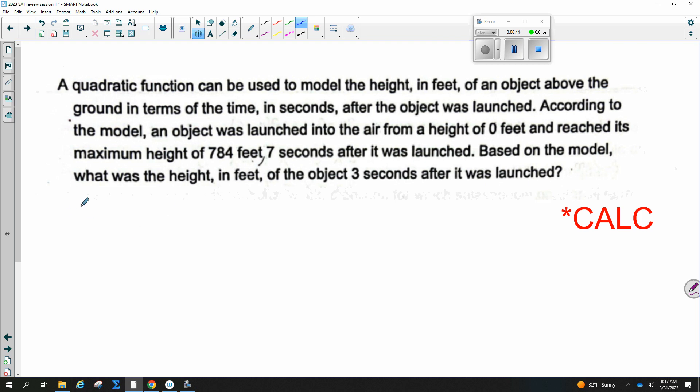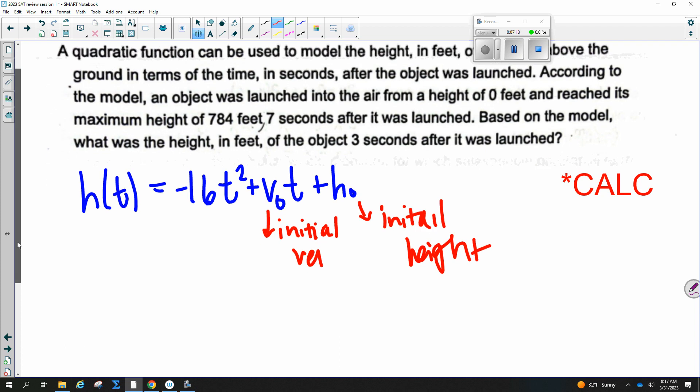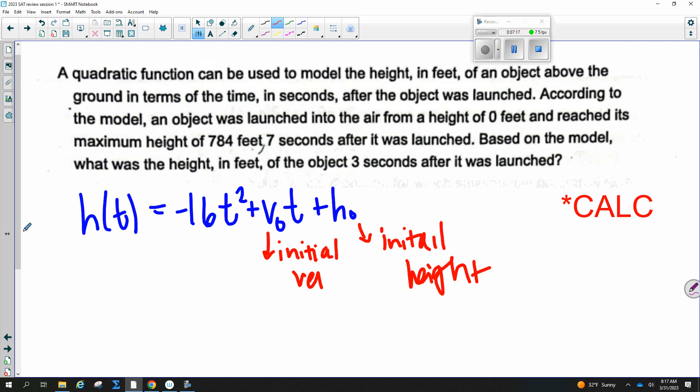You need to know this formula. And we actually are doing this in algebra two right now, but it's probably been a while. So we have our negative 16 from gravity and you just kind of need to know that. We've got our time. This is our initial velocity right here. And this one is our initial height. So we want to plug in anything we know. And the only thing we have really is one coordinate point. So you could plug this 7 in for the time and plug this in for the ending height. It is launched from a height of zero feet. So H naught is zero. And you would be solving for the velocity in this part.